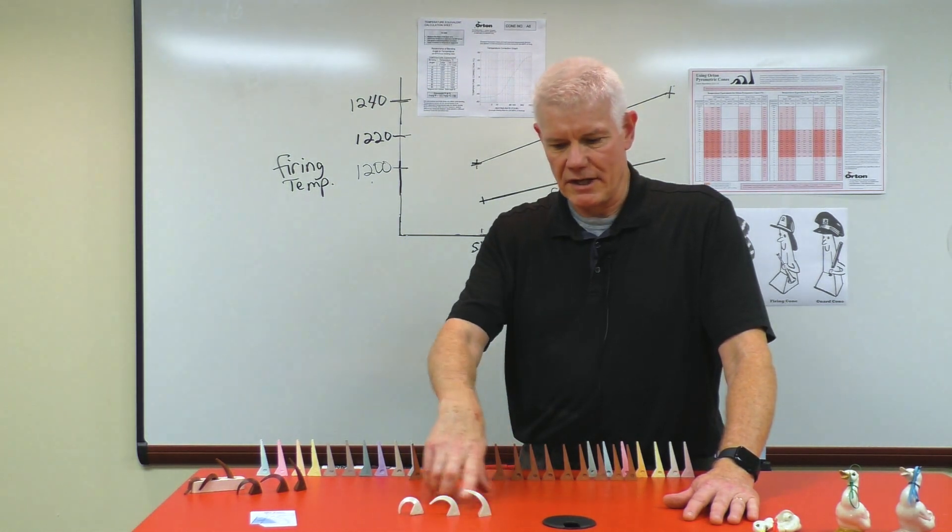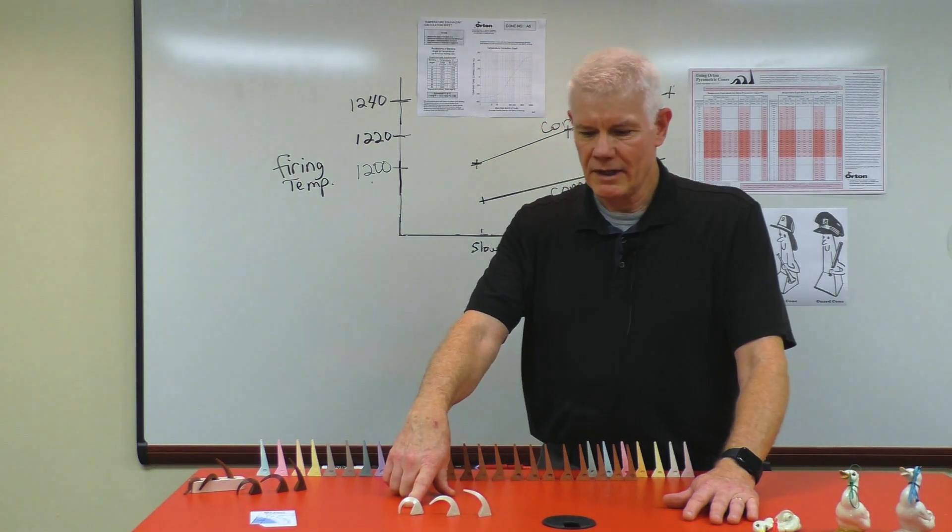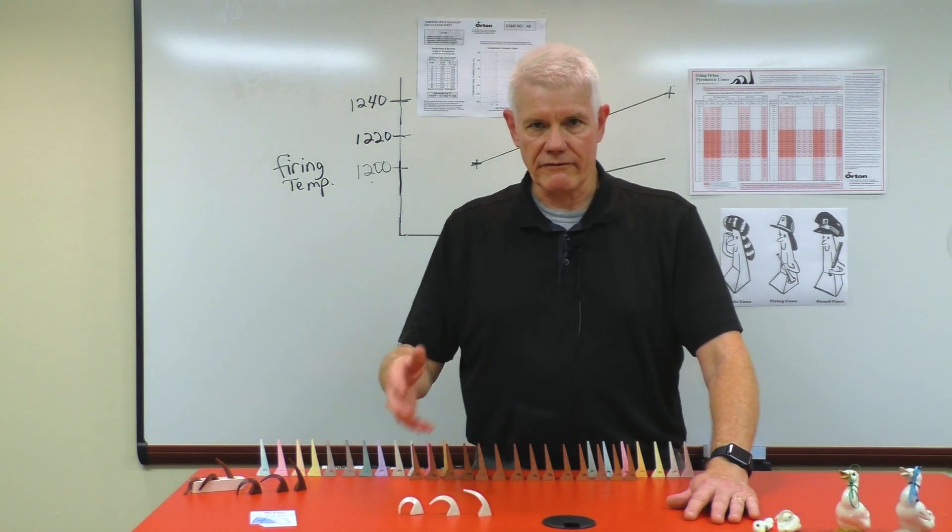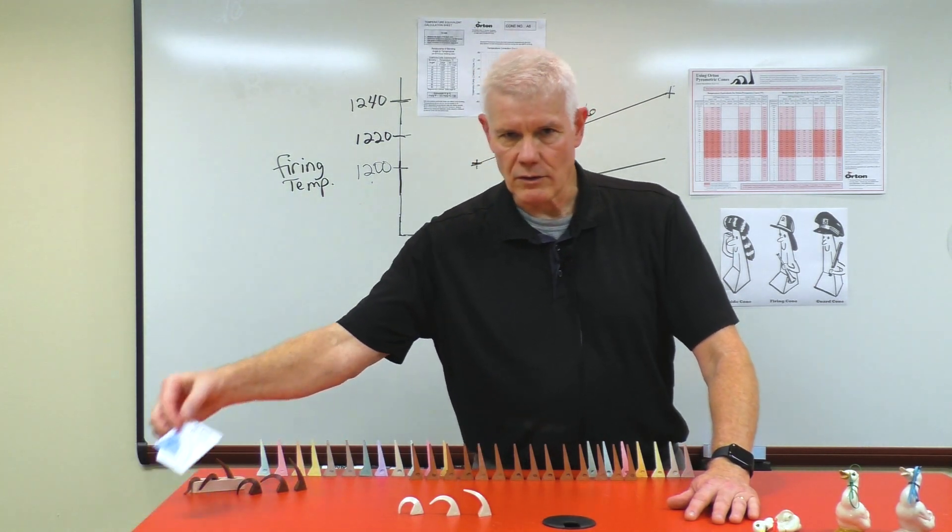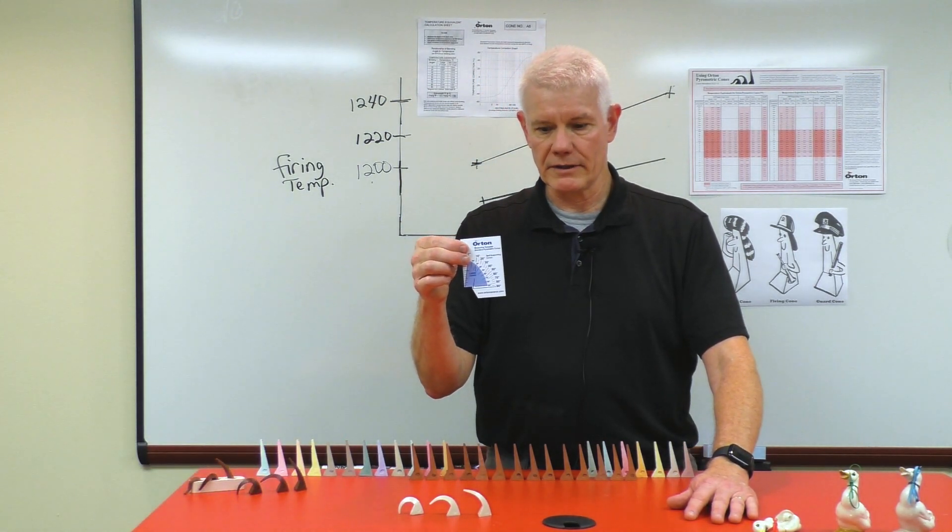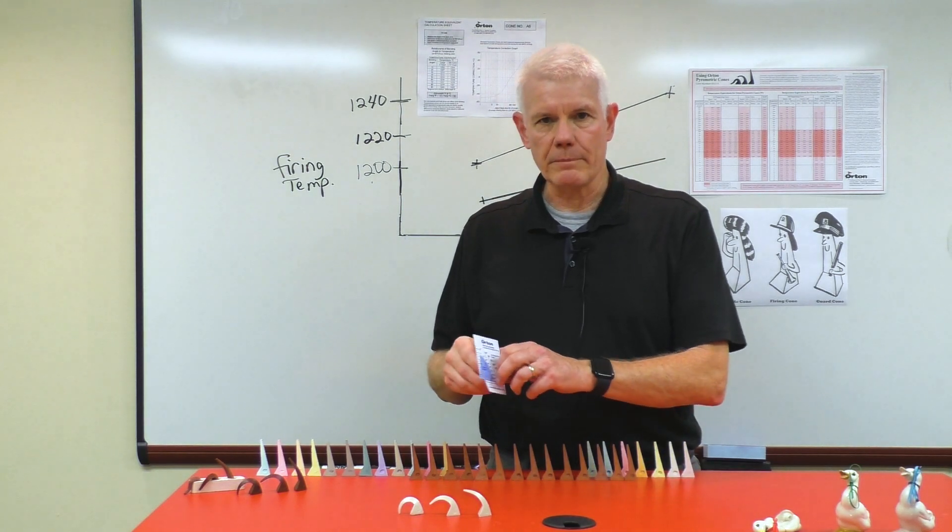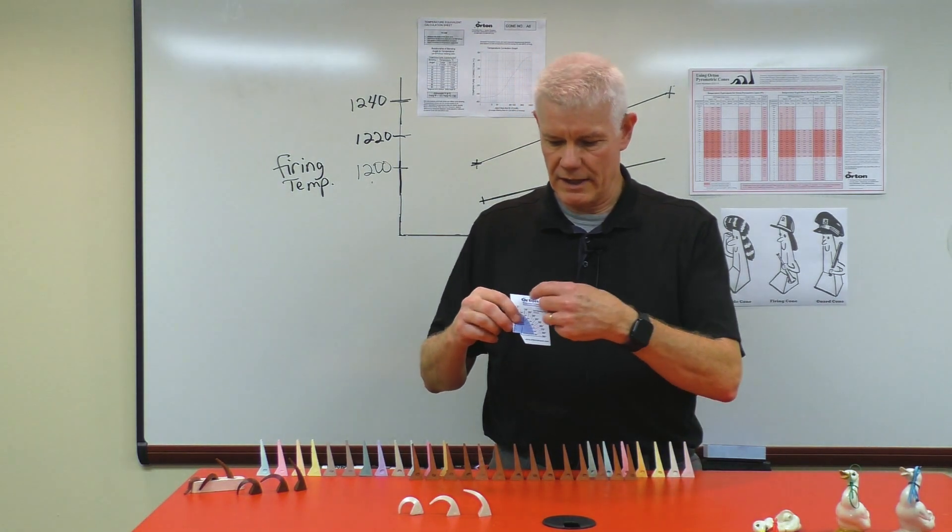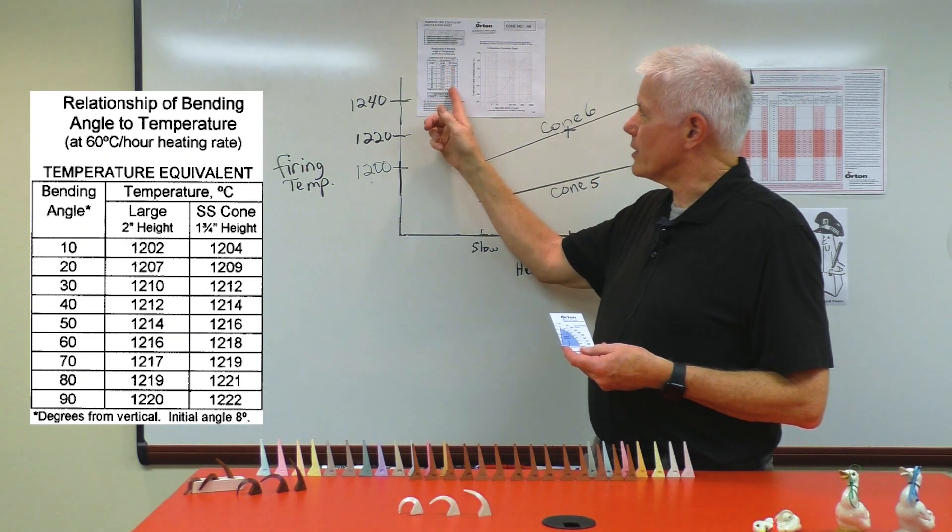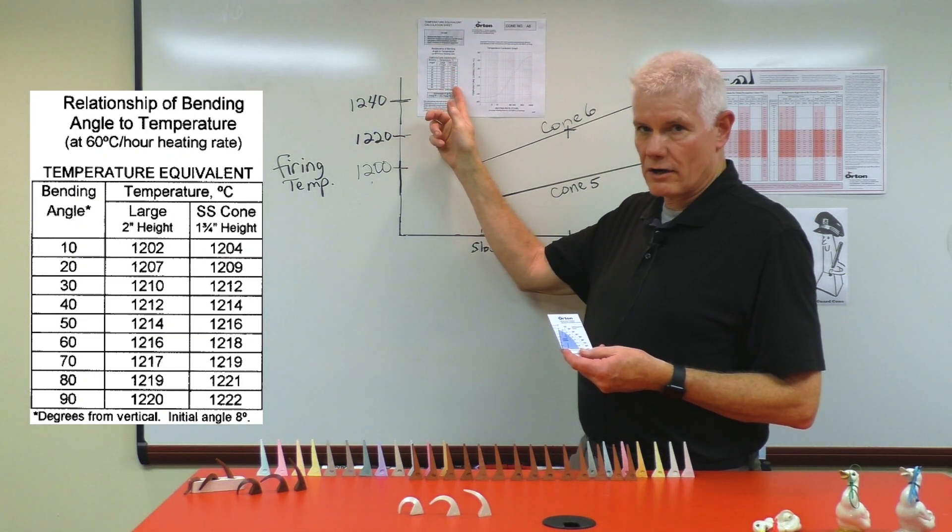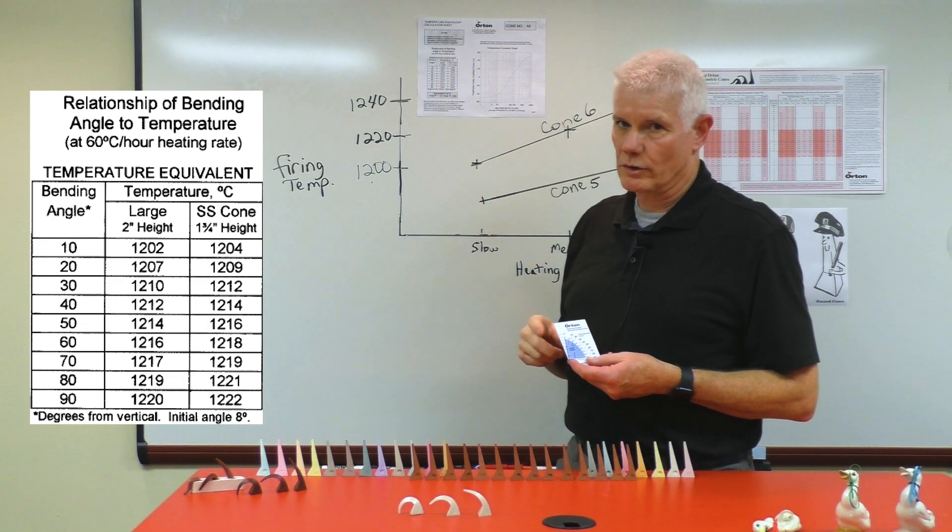The difference that you see here between these cones is merely only a few degrees centigrade which can be measured by using one of our cone templates and placing it up against the cone and measuring the angle, and using the angle you can come over to this chart and determine the actual temperature.